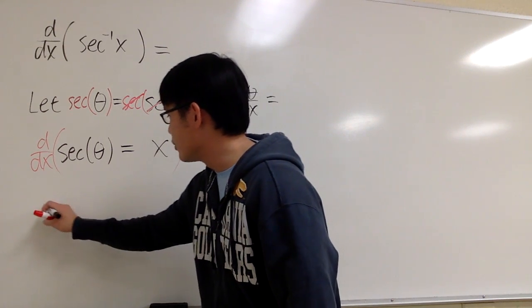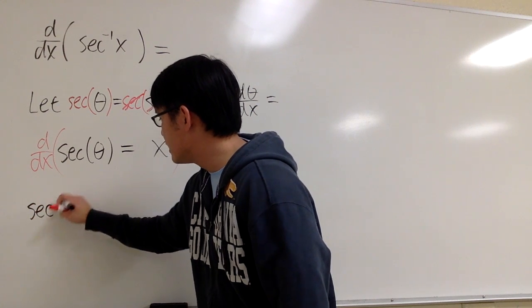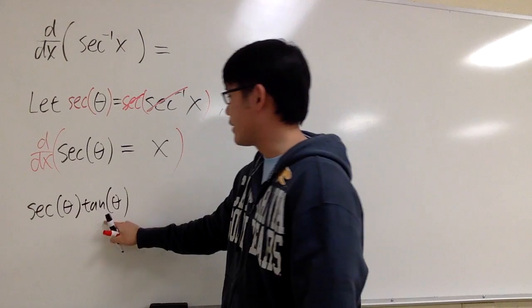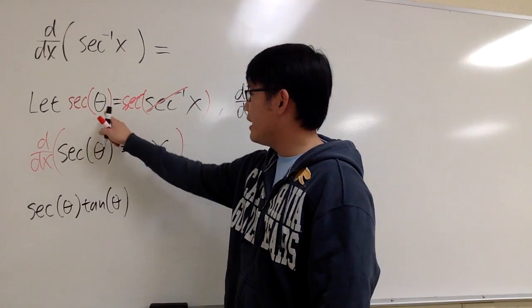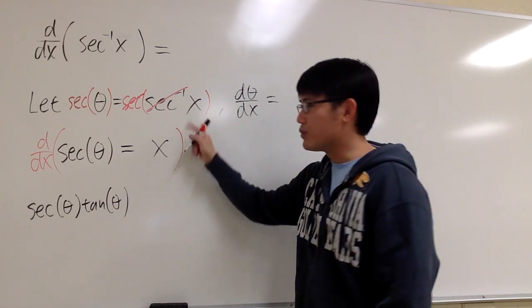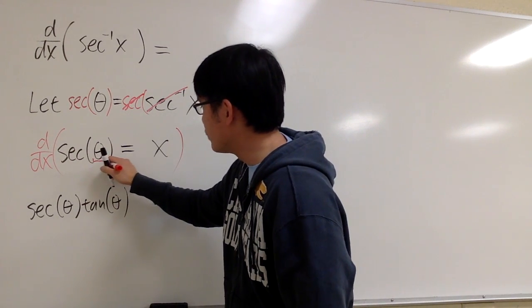So this is going to be sec(θ)tan(θ) based on this. However, theta was a function of x. And because of the chain rule, we have to look at what we have inside.